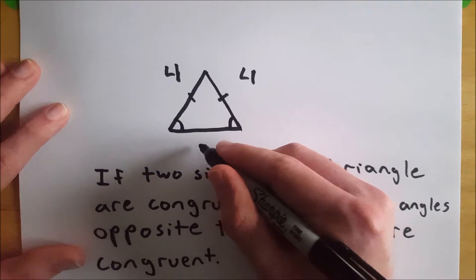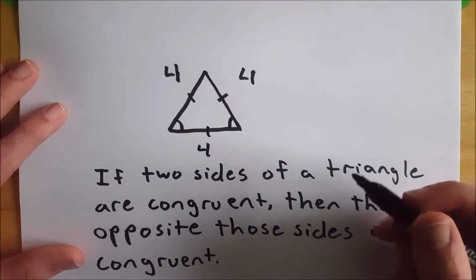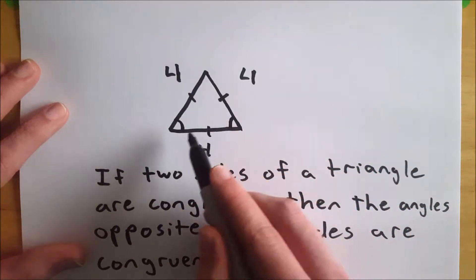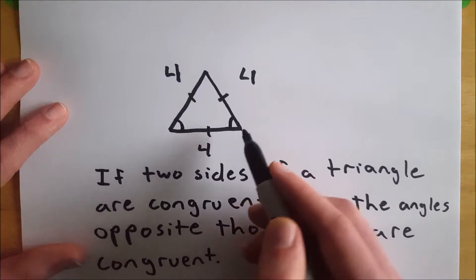Let's say that this side also happened to be four units. So then it's an equilateral triangle, which is a type of isosceles triangle. So then we would know that this side is congruent to this side. Therefore, again, the opposite angles are congruent.